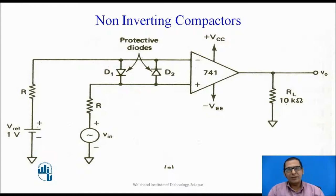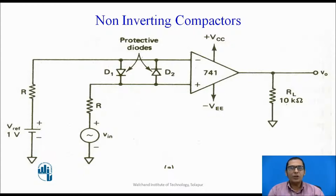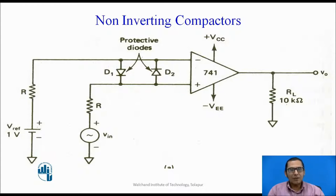How does this work? When the operational amplifier is in open-loop configuration, when the input voltage at the non-inverting terminal is greater than that at the inverting terminal, the output is at positive saturation voltage. When the input voltage at the inverting terminal is greater than that at the non-inverting terminal, the output is at negative saturation. Let us apply the same rule to this circuit. The reference voltage of plus 1 volt is connected to the inverting terminal, and the varying sinusoidal signal is connected to the non-inverting terminal. Let us compare the input and output voltage waveforms.